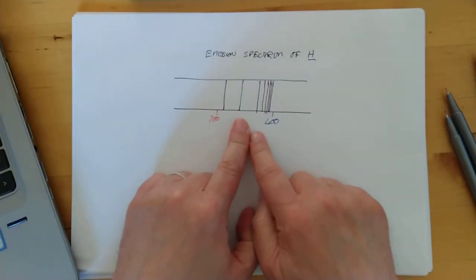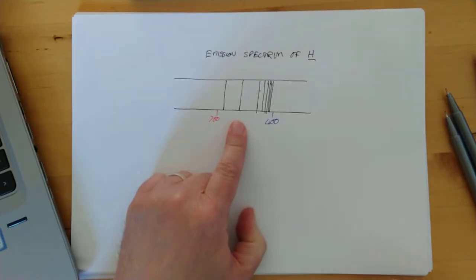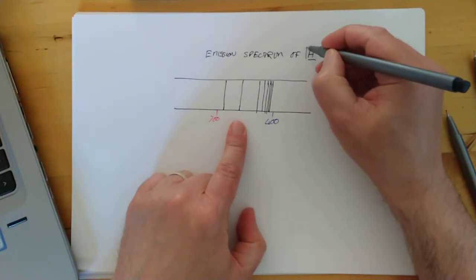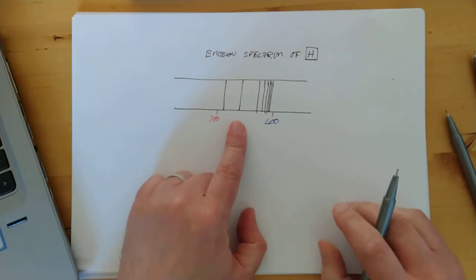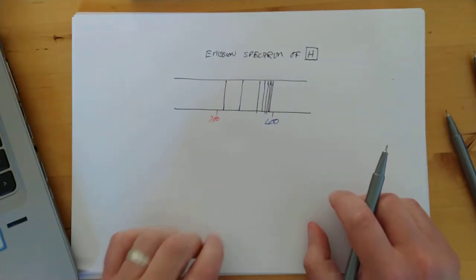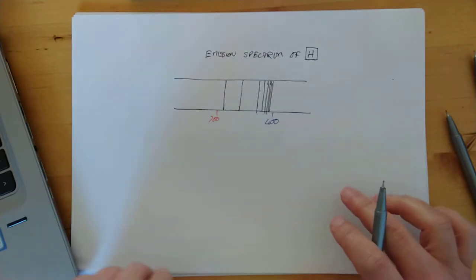Here's one I prepared earlier. As they say, here's an emission spectrum of hydrogen. We're going to go with hydrogen. Why? Because it's nice and simple. Simplest element, universe, one proton, one electron. Can't go far wrong with that.